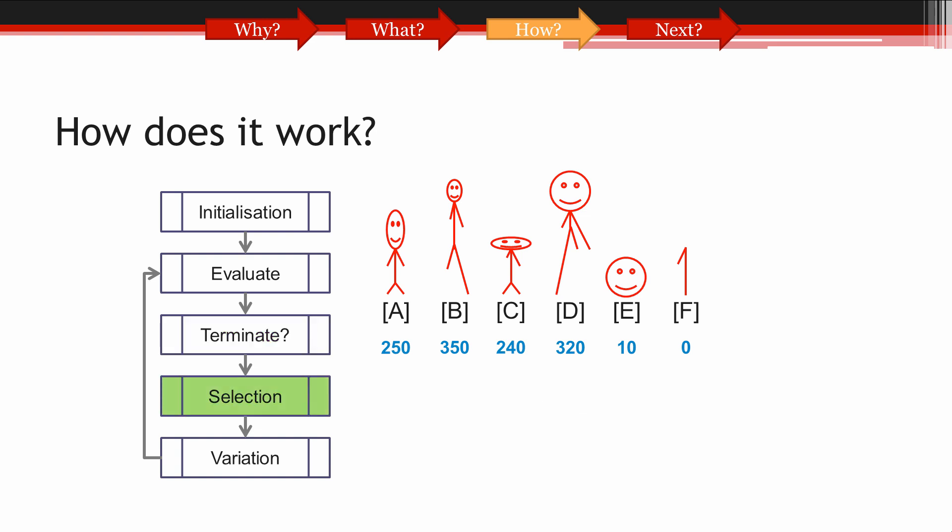This stage is called selection, and this is where survival of the fittest takes place. If we were to pick three solutions from this population to produce offspring for future generations, which three would we pick? Typically, we would select the three solutions with the highest fitness score, because we expect these three to contain the most valuable genetic information, and we want this genetic information to be passed on to the new solutions.